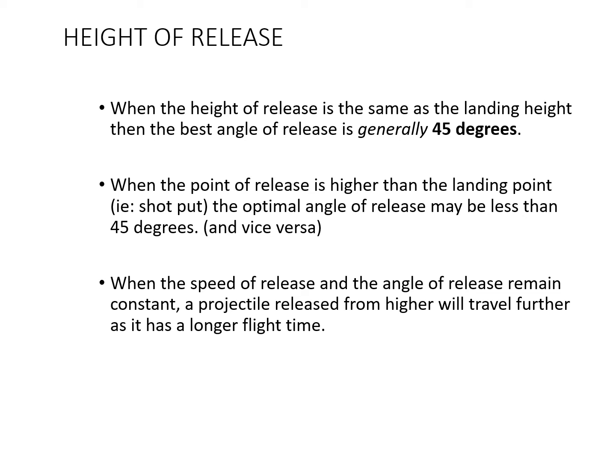In the case of the javelin on the slide previous, it was actually 30 degrees, which seems to be quite flat. Obviously the aerodynamics and the drop in air resistance of that javelin help us get away with a slightly lower level. So when the speed of release and the angle of release remain constant, a projectile released from higher will travel further as it has a longer flight time. So all things being constant, a higher release point will give a further distance for a projectile.